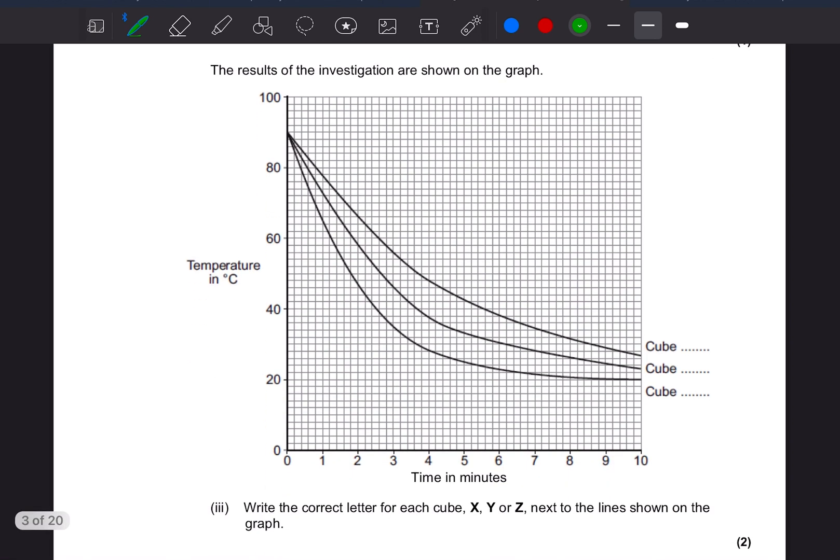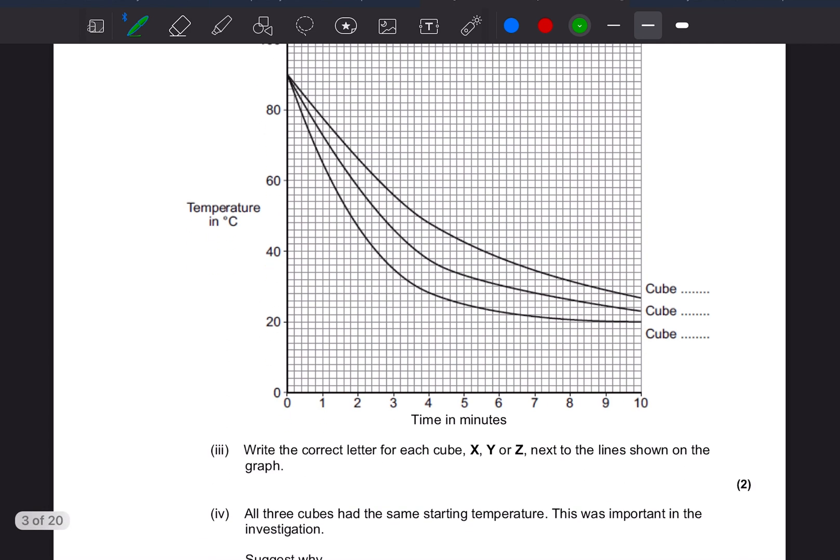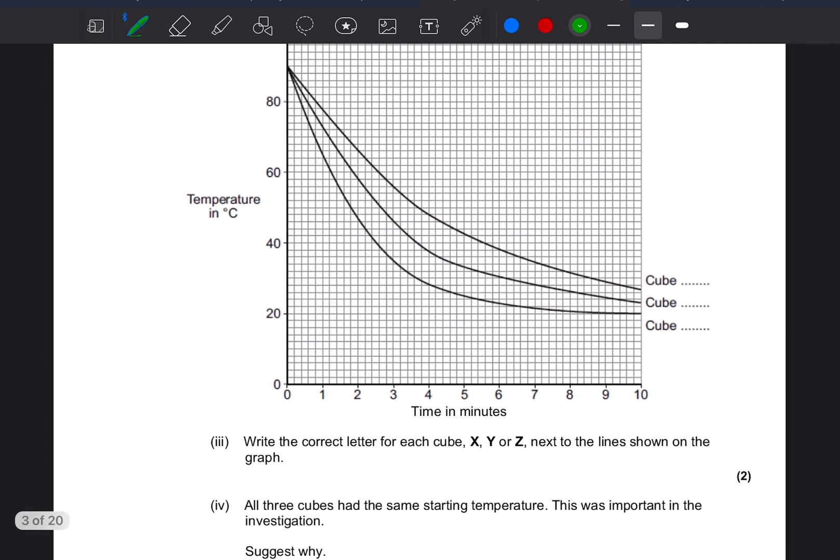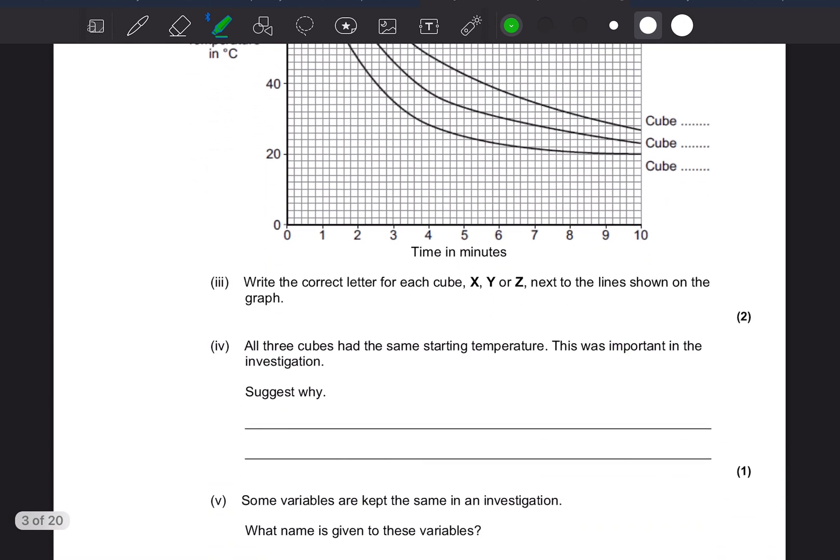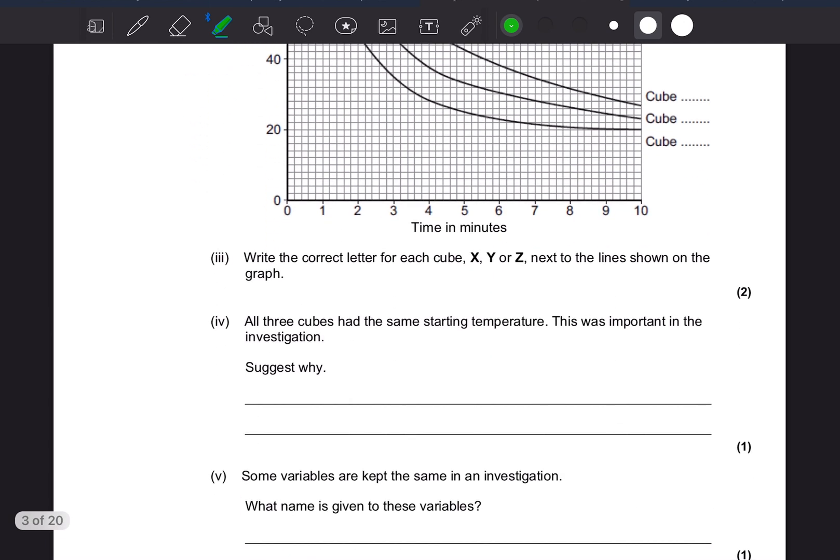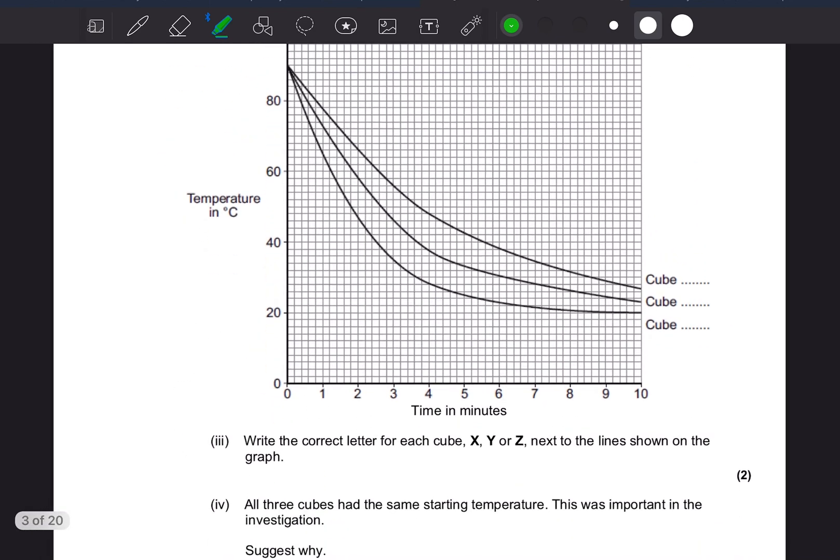The results of the investigation are shown on the graph. Write the correct letter for each cube X, Y, and Z next to the lines shown. So we've got to put them into this area here. Again, check where the marks are on the paper because it's very easy to look and miss that out. A lot of people would just see there's no line to write anything on therefore there's nothing to do and move straight out of this question. There is something to do, you've got to write these lines.